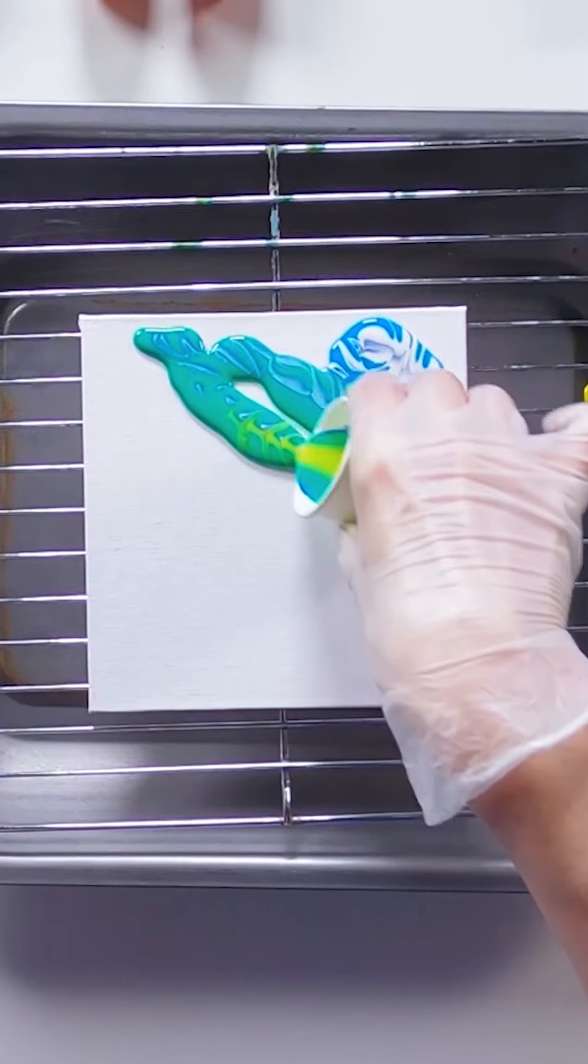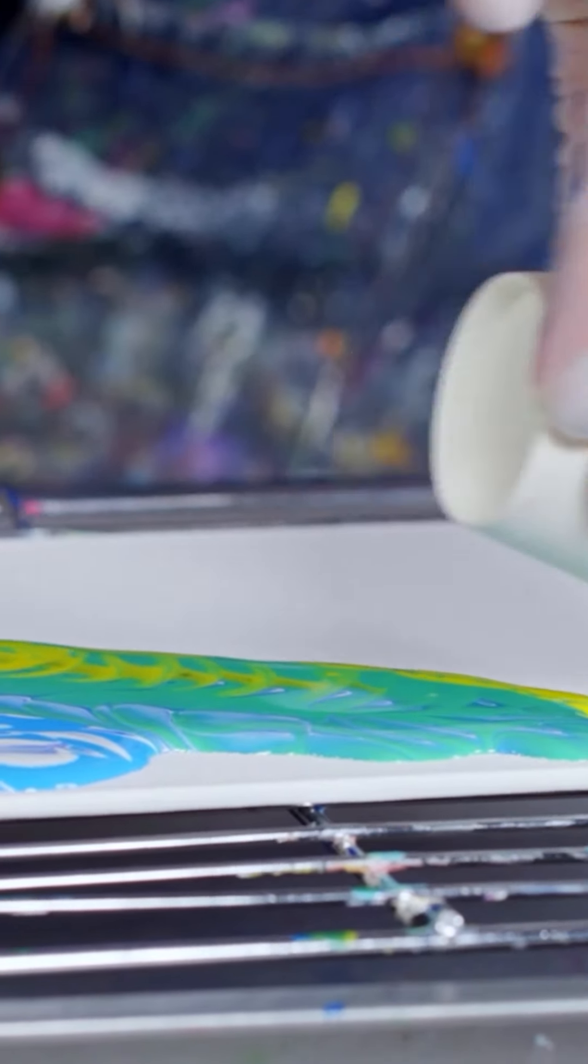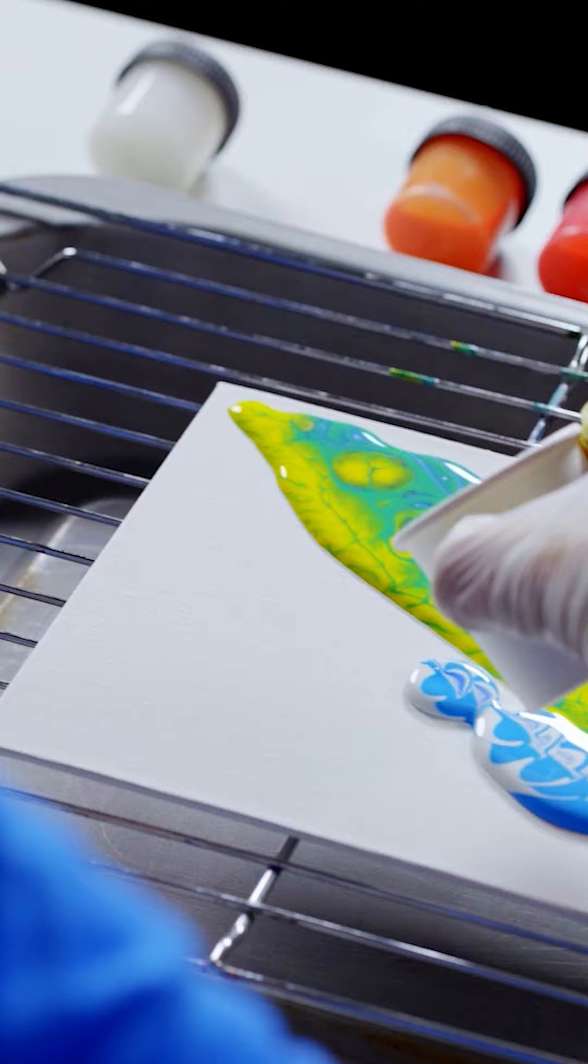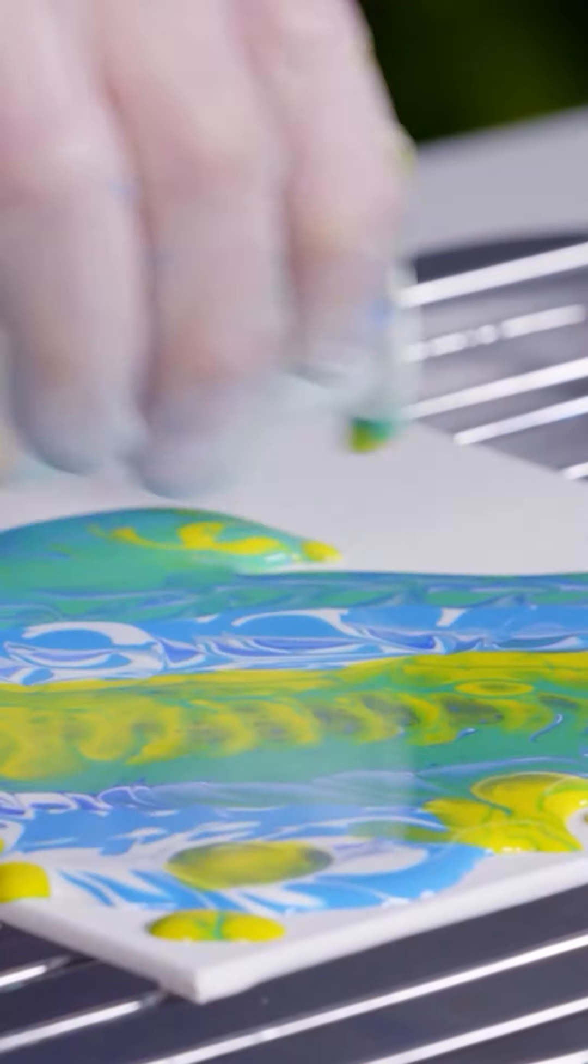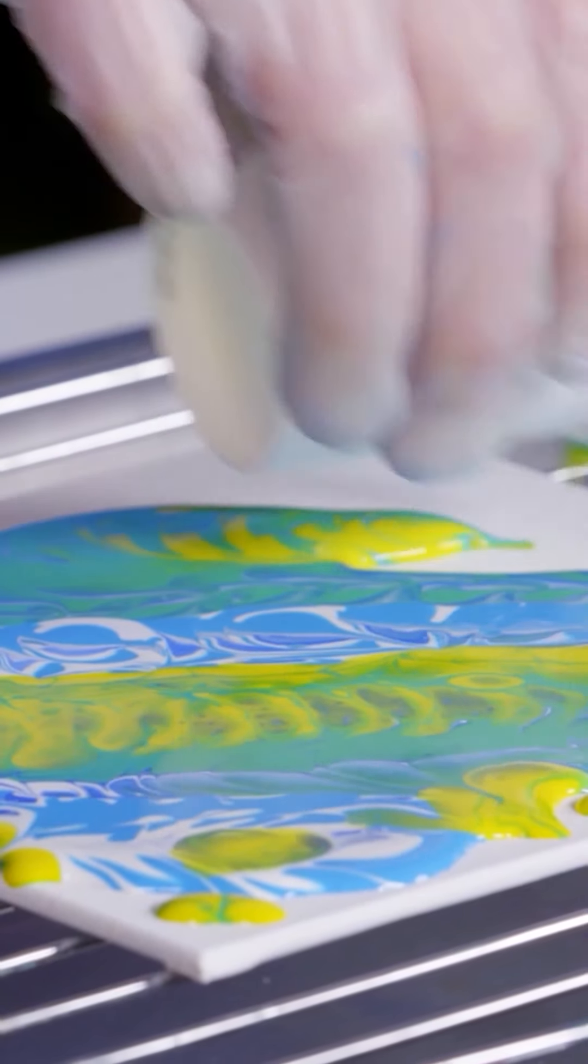Moving in a zigzag fashion up and down, empty the first half cup on the canvas. Repeat this across the other half of the canvas with the second cup of color to fill the board with paint.